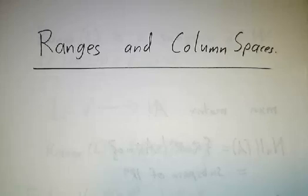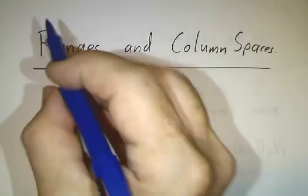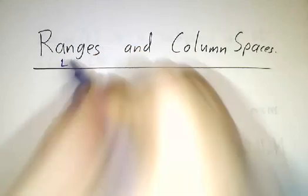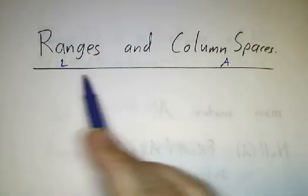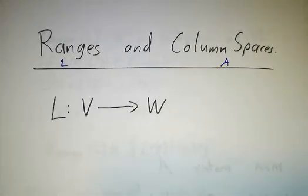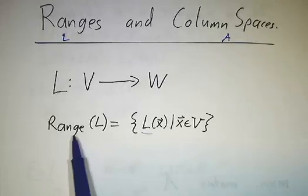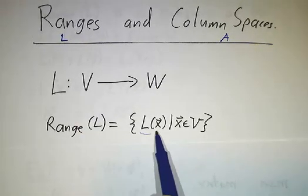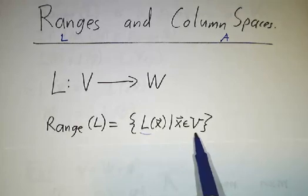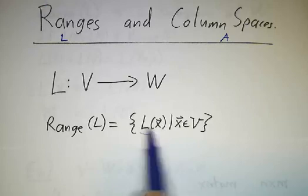Now that we understand kernels and null spaces, we're going to look at ranges and column spaces. Ranges refer to linear transformations, and column spaces refer to matrices, and they're going to be related. If you have a linear transformation from a vector space V to a vector space W, the range is the set of all possible outputs — you take everything in V and feed it to your linear transformation, and what comes out is your range.